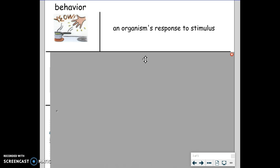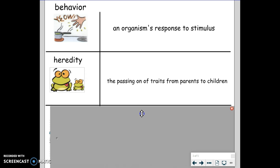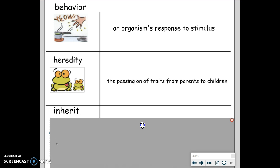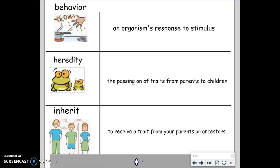Card number four. Heredity. The passing on of traits from parents to children. Card number five. Inherit. To receive a trait from your parents or ancestors.